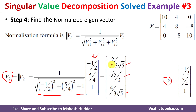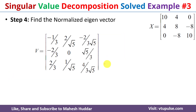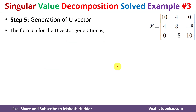Once we combine these three normalized eigenvectors, we get the V matrix, where the first column is v0, the second column is v1, and the third column is v2.